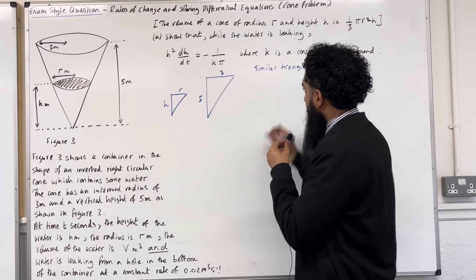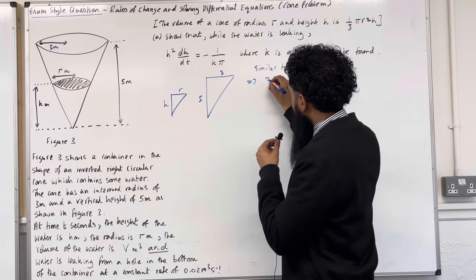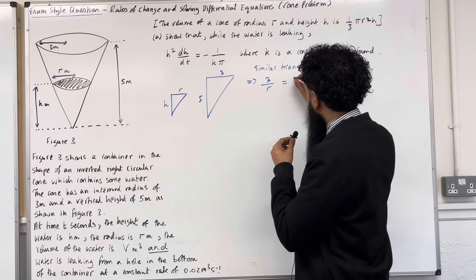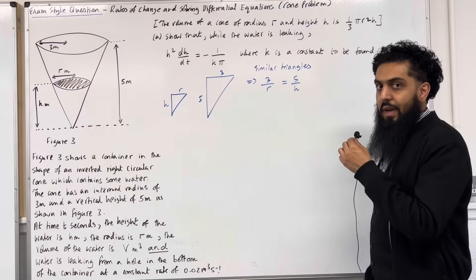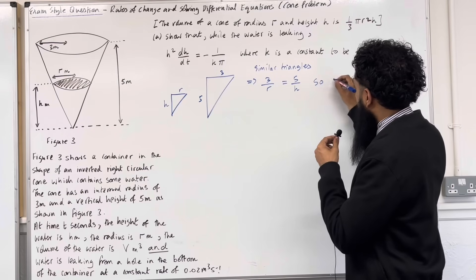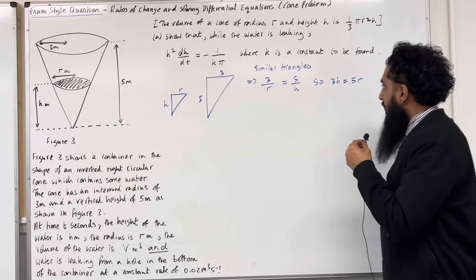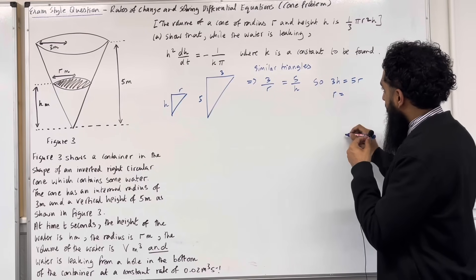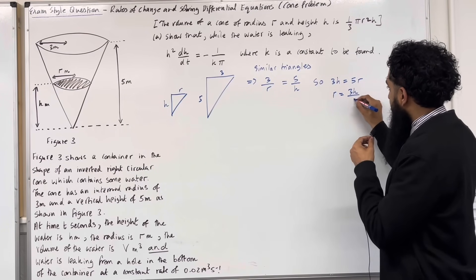Since we have similar triangles, the scale factors must be equal: 3 divided by r equals 5 divided by h. Cross-multiplying gives 3h = 5r, so r = 3h over 5.